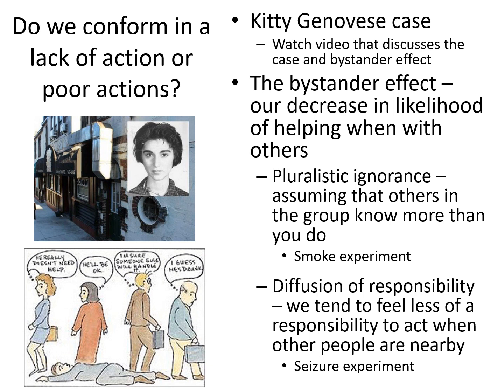Two of the things they examined are the concepts of pluralistic ignorance and diffusion of responsibility. Pluralistic ignorance is a universal effect that happens when people are with groups — when we find ourselves with others, we tend to rely much less on ourselves and our own thoughts and beliefs, and much more on others to dictate what we're going to do. The end result is that the group tends to make worse decisions together than if they were a collection of individuals treating the situation uniquely. This was highlighted in the video when they discussed the smoke experiment that Latané and Darley ran.